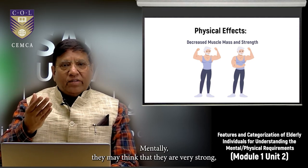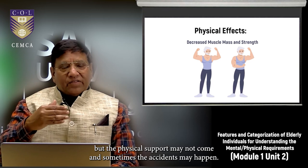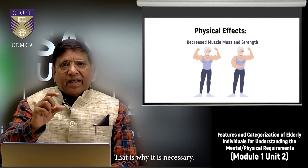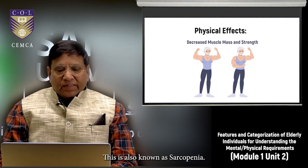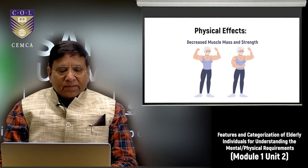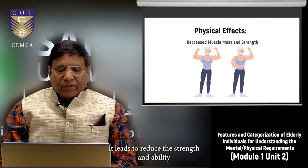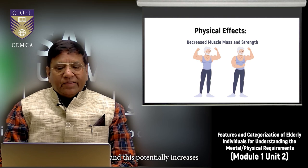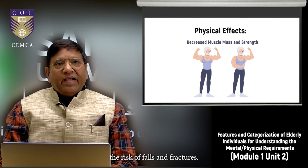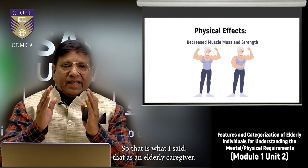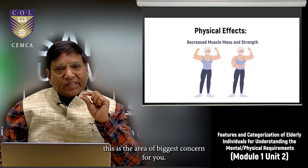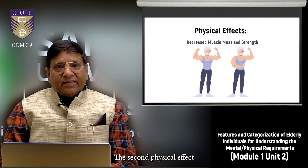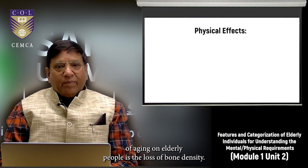Mentally they may think they are very strong, but the physical support may not come, and sometimes accidents may happen. This condition is also known as sarcopenia — it leads to reduced strength and ability, potentially increasing the risk of falls and fractures. As an elderly caregiver, this is the area of biggest concern.